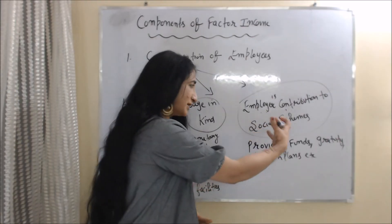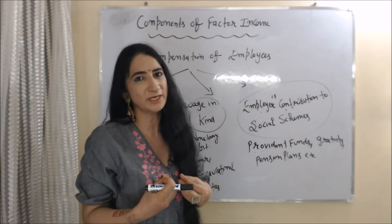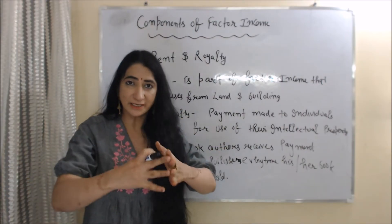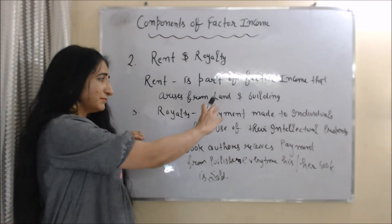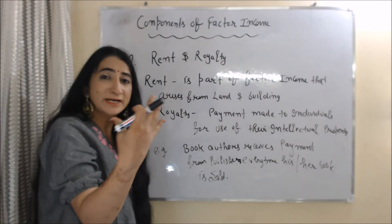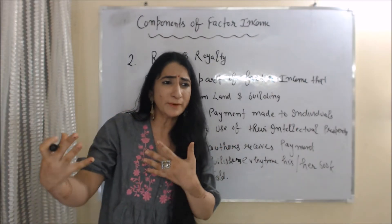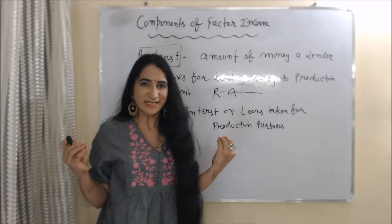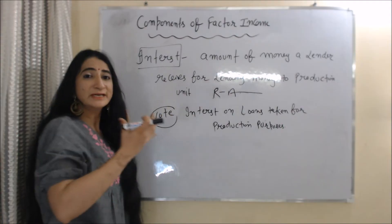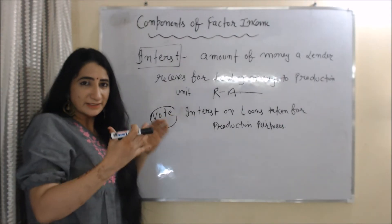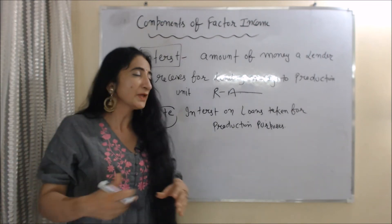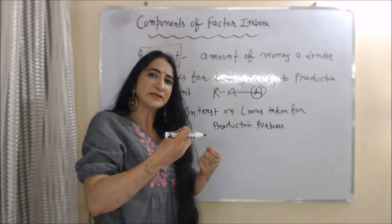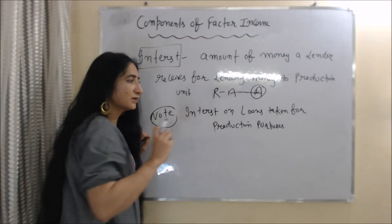Employer contribution to social schemes means provident fund, gratuity, and pension plans provided by companies to their employees. The next component of factor income is rent and royalty. Rent is the part of factor income that arises from land or buildings. Royalty is payment made to an individual for use of their intellectual property — such as inventions or ideas. For example, book authors receive payment from publishers every time their book is sold. Interest is the amount of money that a lender receives for lending money to a production unit. Here we only include interest on loans taken for production purposes.